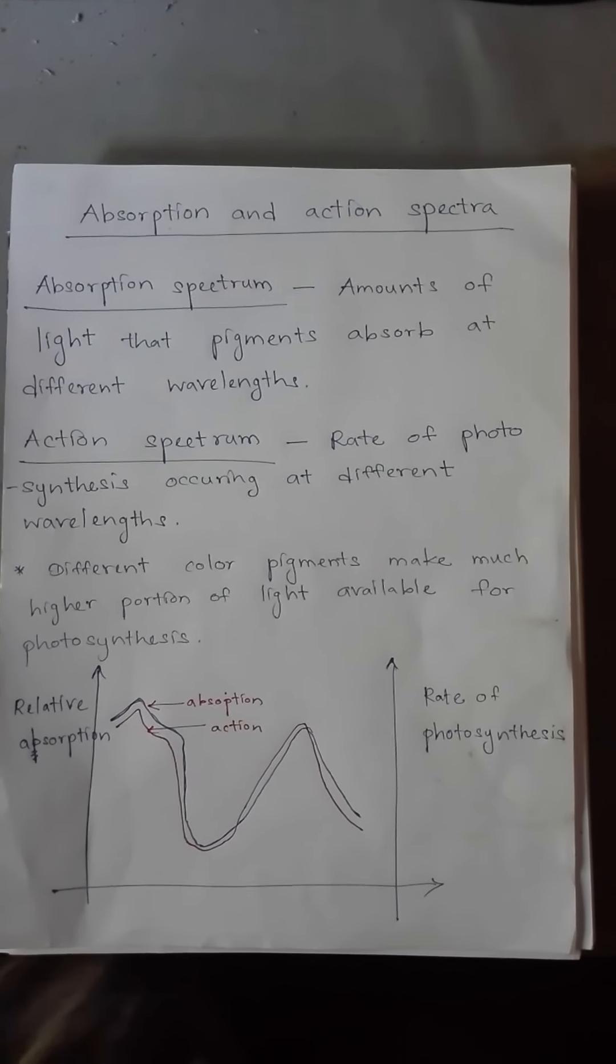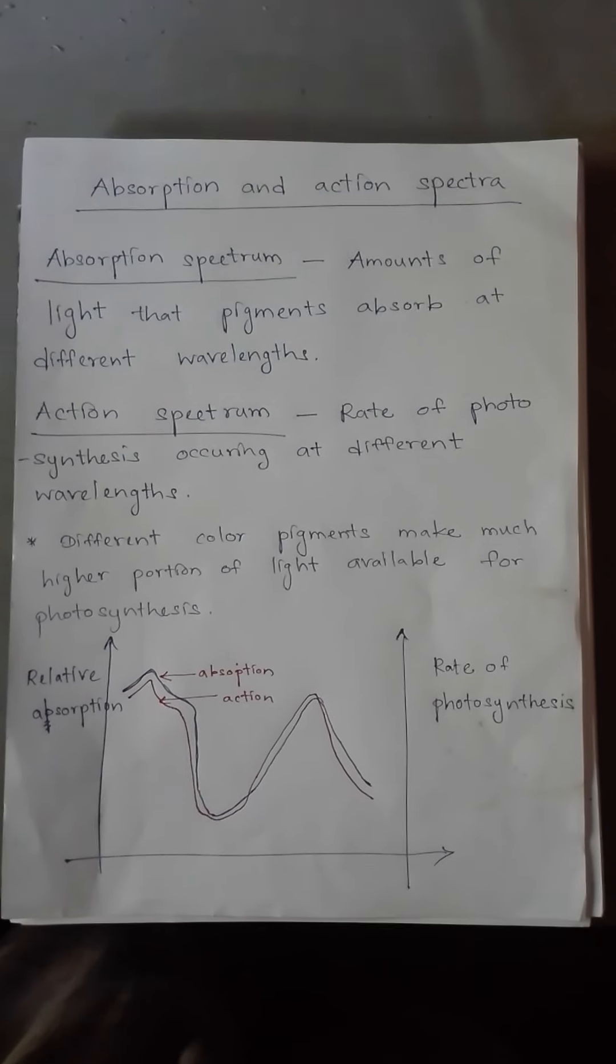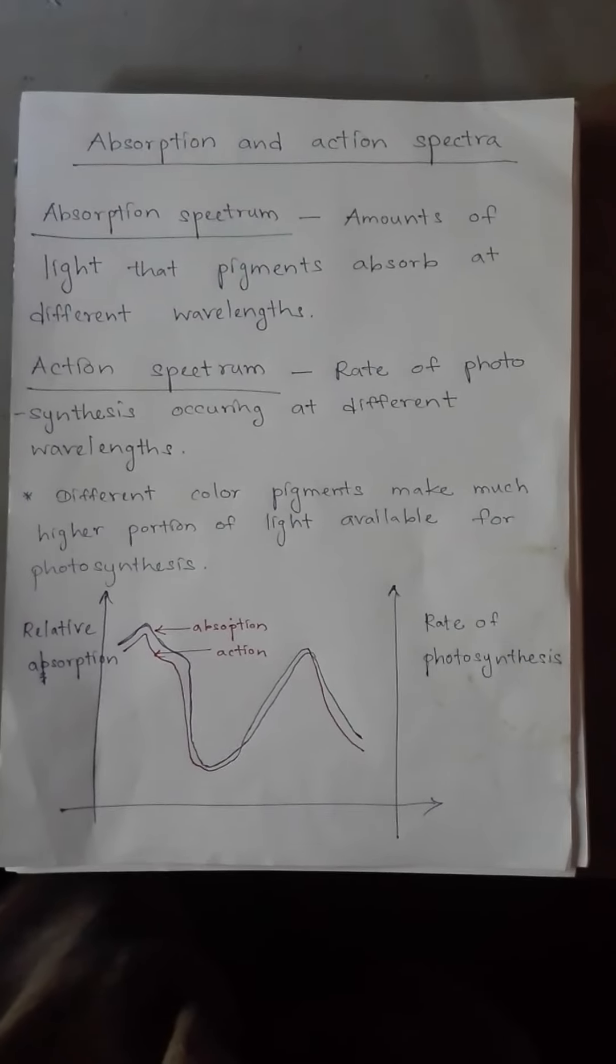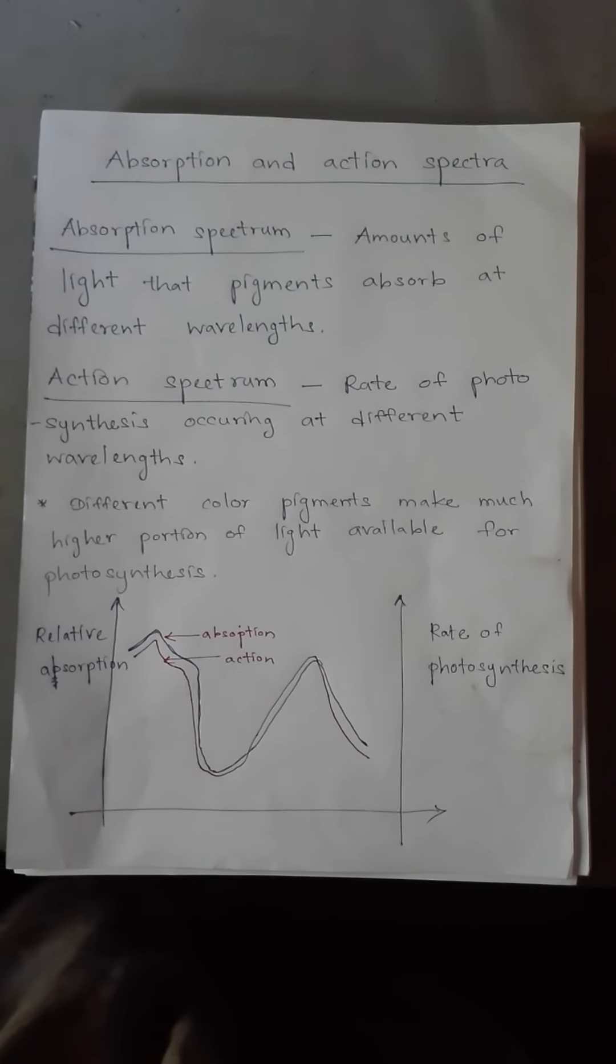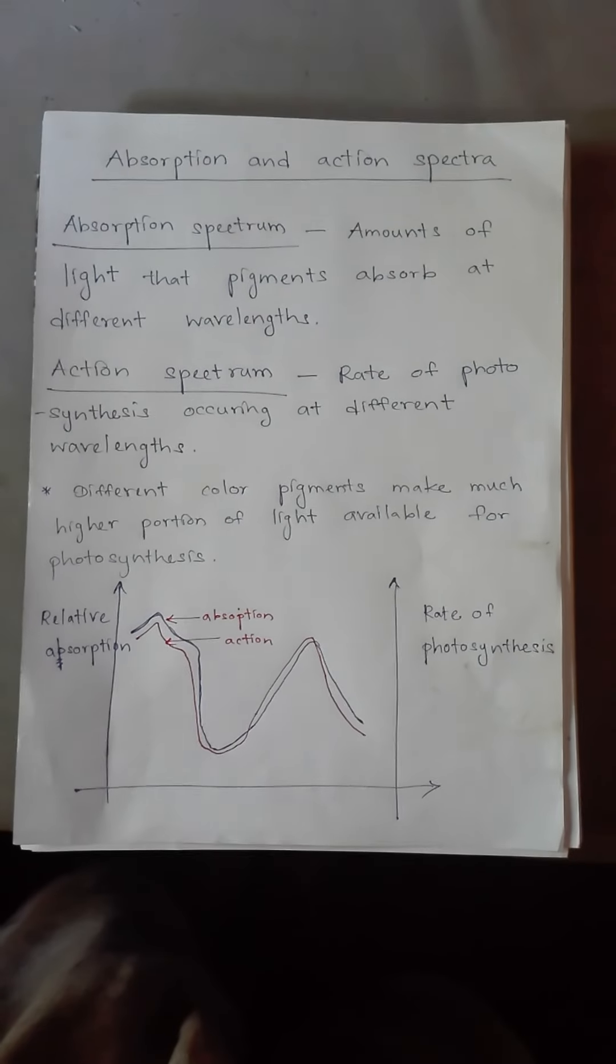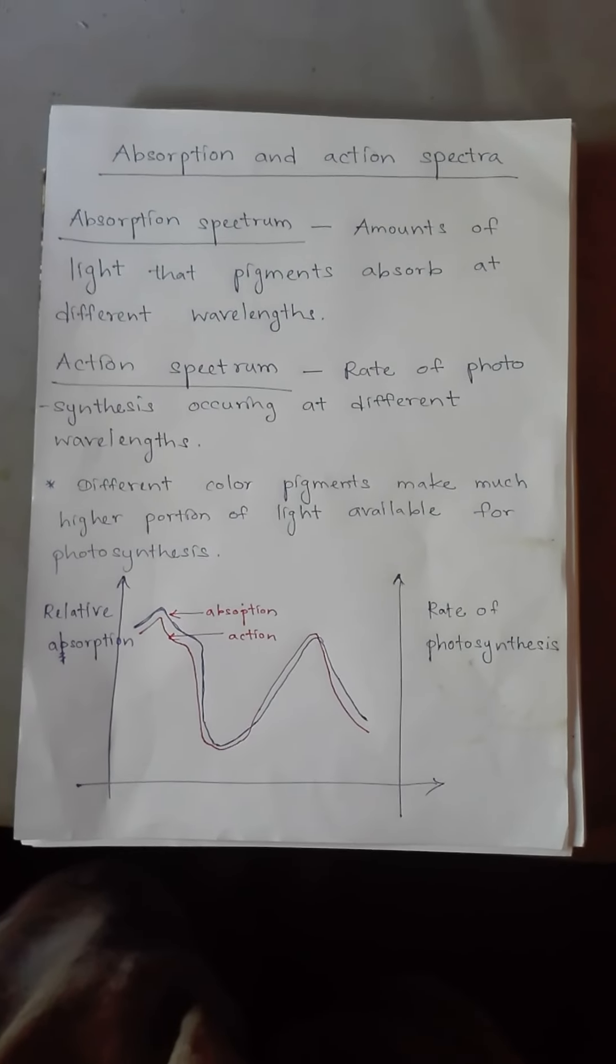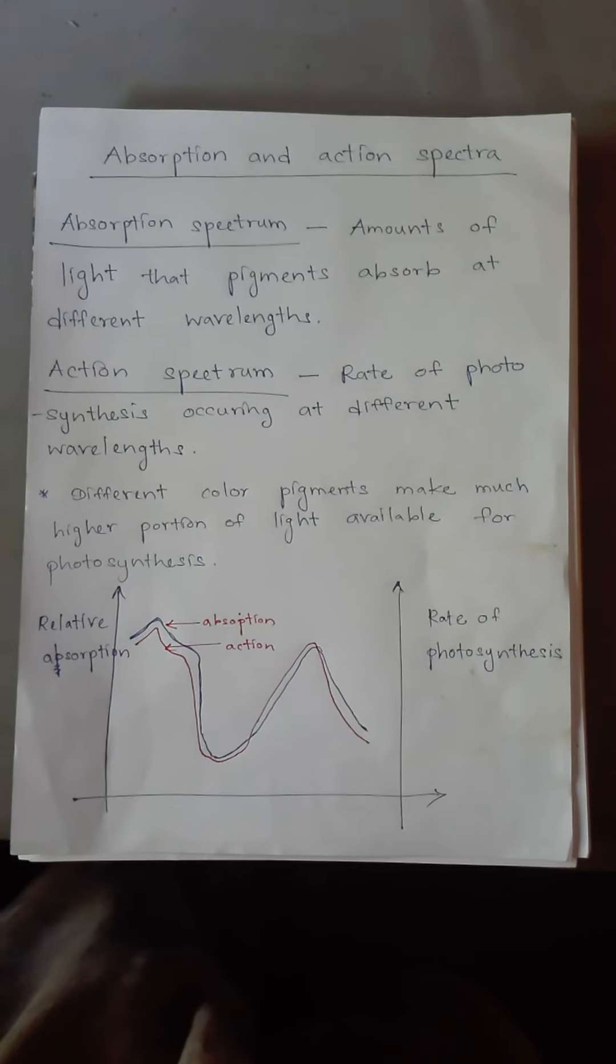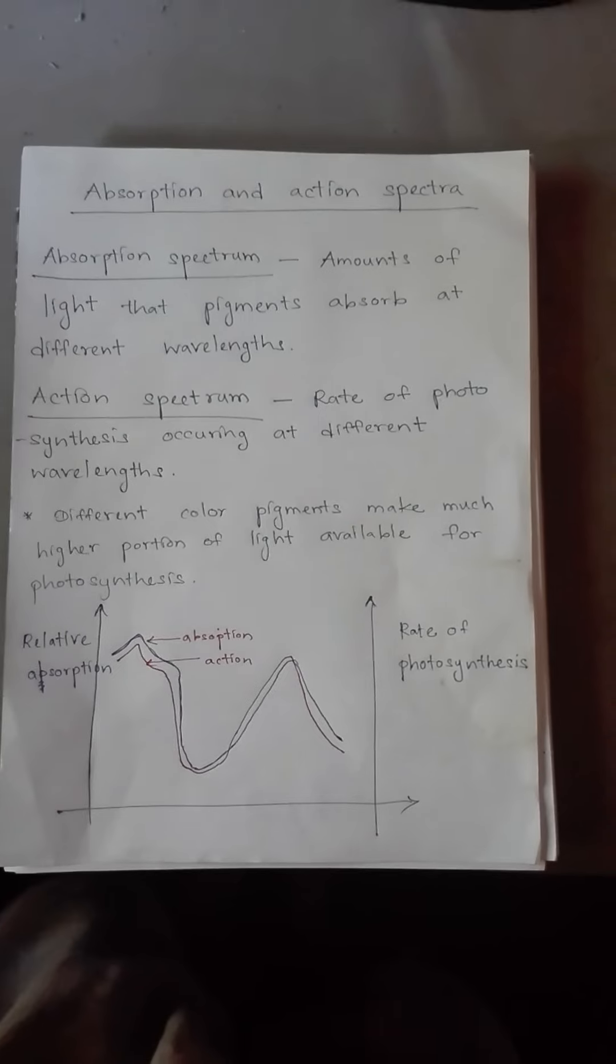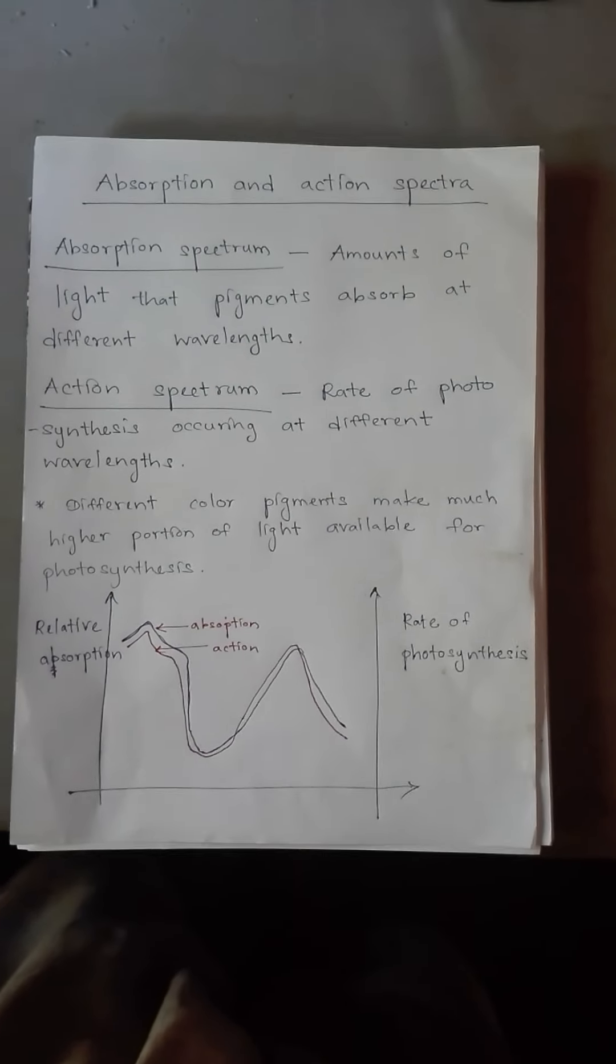The components of chlorophyll pigments absorb light at different wavelengths. The amount of light absorbed by each pigment is different, but an overall absorption spectrum can be plotted.